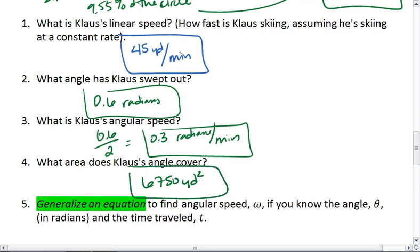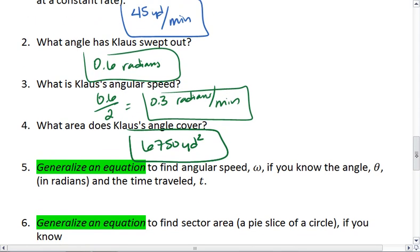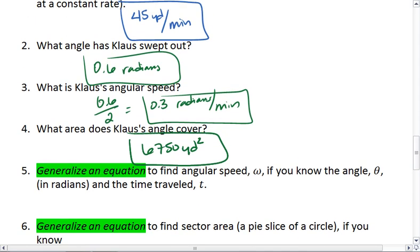Generalizing an equation. Let's generalize some of these equations to find angular speed ω. If we want to know how quickly someone's traveling, and we know the angle measure and the time traveled, angular speed is going to be the angle covered over time that it took to cover that angle.